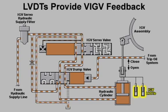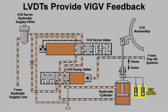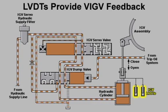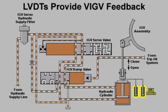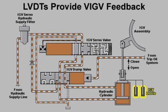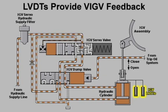The core of each LVDT moves as the angular position of the variable inlet guide vanes changes. This provides feedback to the control system concerning the actual VIGV angle.